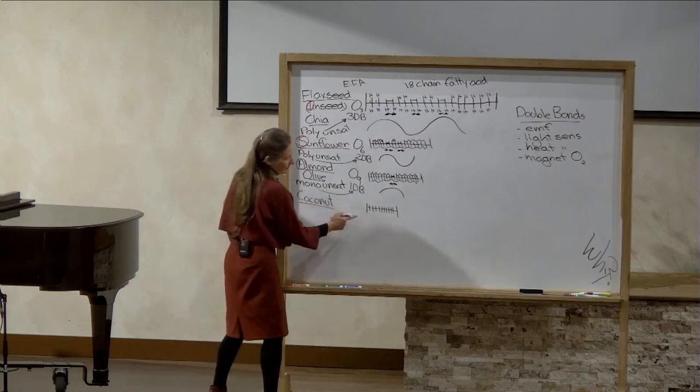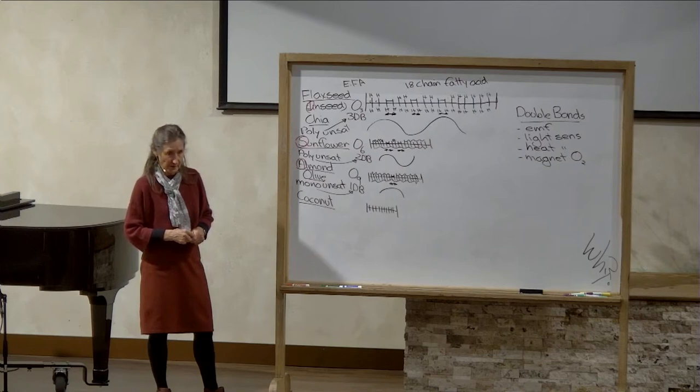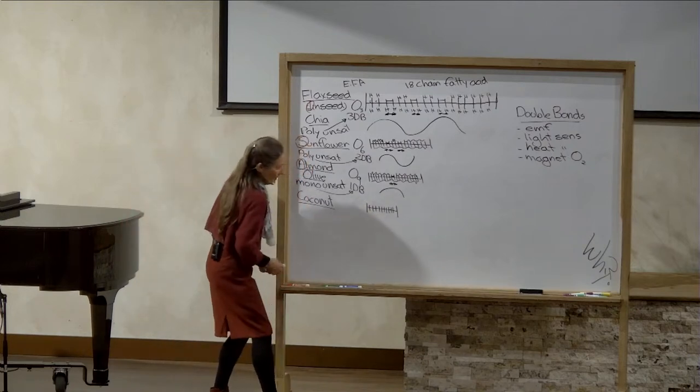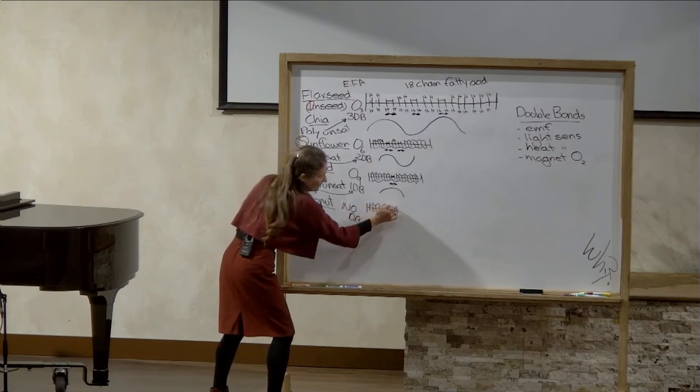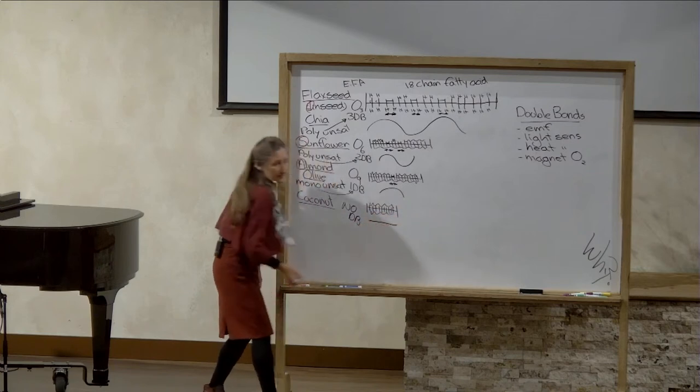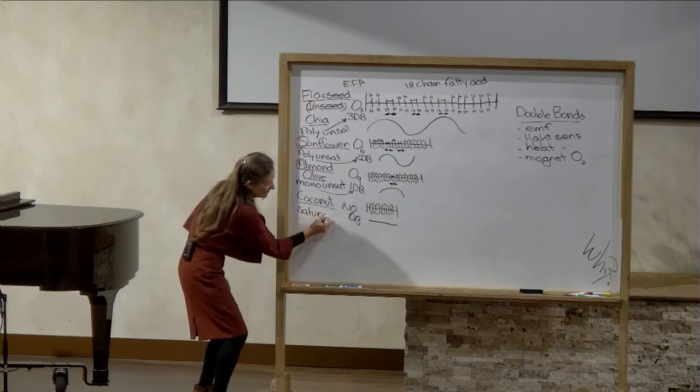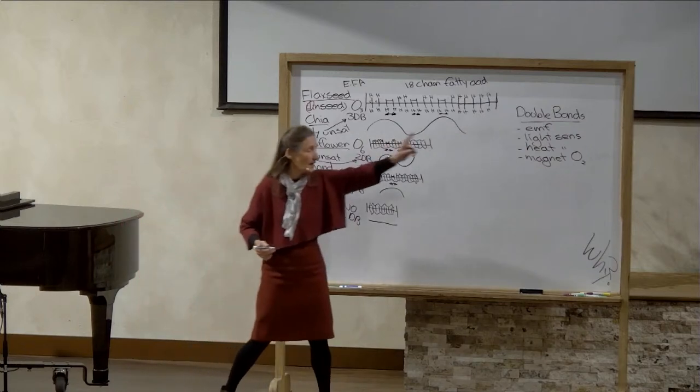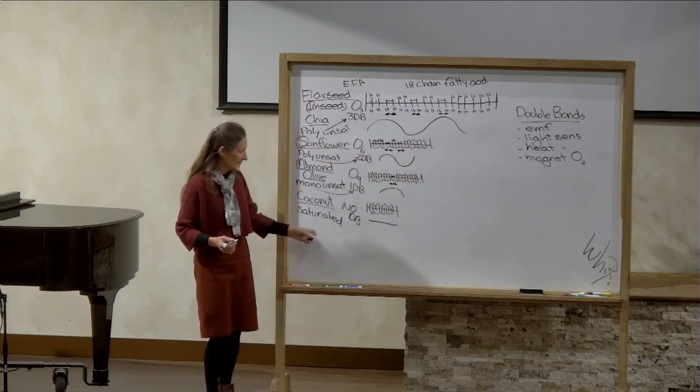Coconut is high in short and medium chain fatty acids. Short chain would be six, eight, ten chains. Medium would be 12, 14, 16 chains. I've drawn a ten chain there and it has no double bonds. So every spot is full. So in the cold weather, it's solid. It's a saturated fat because there are no empty spots. As a result, it is light resistant, heat resistant and oxygen resistant. It's the most stable oil.